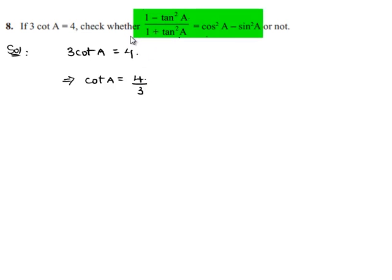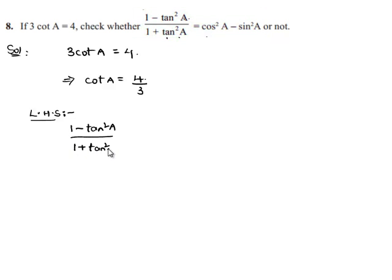We are asked to check whether (1 minus tan square a) by (1 plus tan square a) is equal to cos square a minus sin square a or not. Let us consider the left hand side of the equation, that is (1 minus tan square a) by (1 plus tan square a), which can be written as (1 minus tan a whole square) by (1 plus tan a whole square).